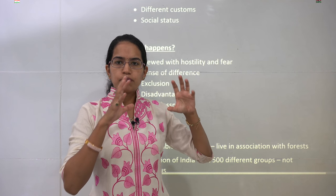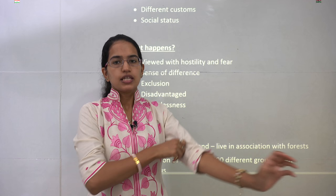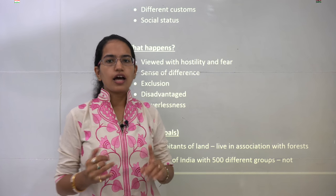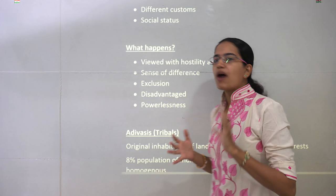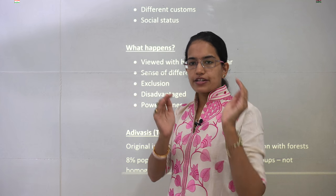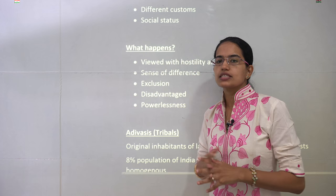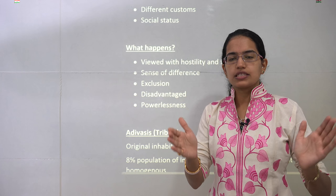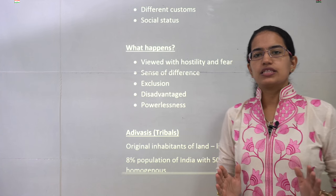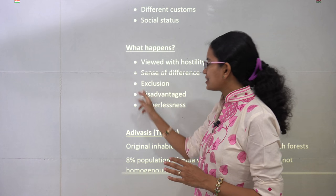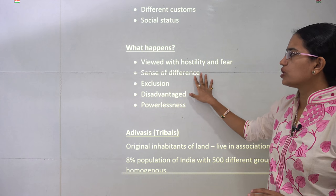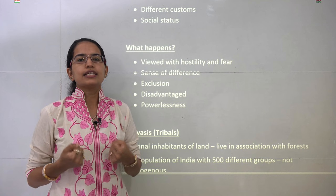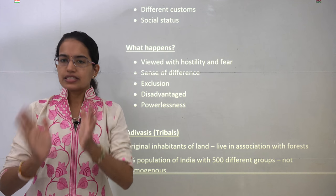Once a person or group is marginalized, a few important things happen. First, there is a state of powerlessness that develops — since there are very few in that group, they become powerless. They feel disadvantaged and are excluded from the mainstream. Sometimes people feel they cannot adjust to the mainstream, resulting in exclusion. There is also a sense of difference created, sometimes due to prejudice or stereotype, and hostility and fear develop among the marginalized group.